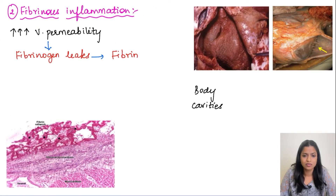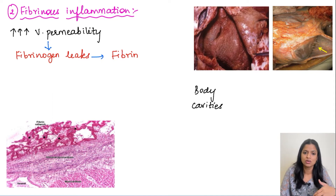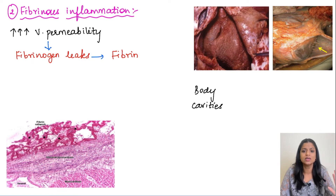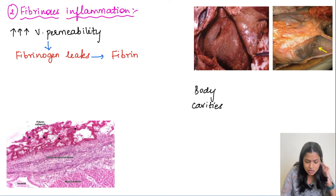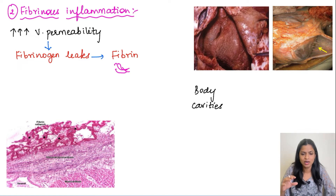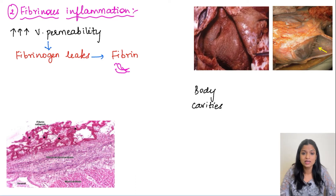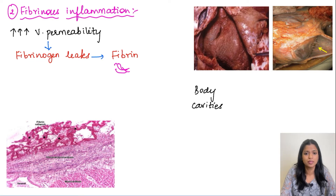Moving on to the second type, fibrinous inflammation. This happens when vascular permeability is large enough that bigger molecules like fibrinogen also leak out of the vessel into the extracellular space. Fibrinogen is a clotting factor; when activated it forms fibrin, which appears as thin pinkish meshwork-like threads. Fibrinous inflammation can also occur when there is a procoagulant stimulus such as cancer.